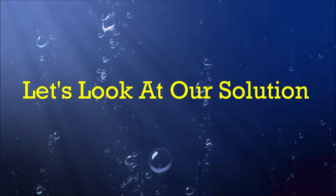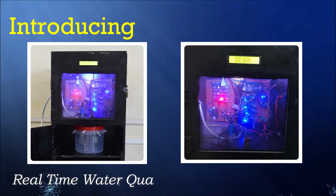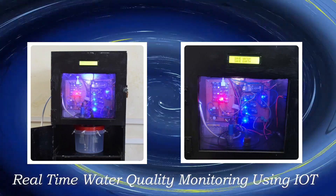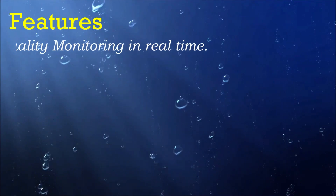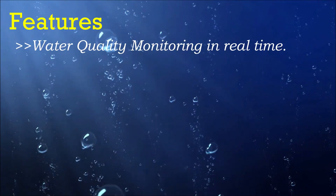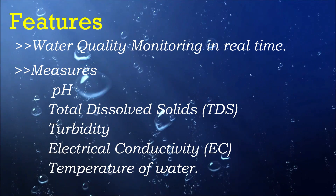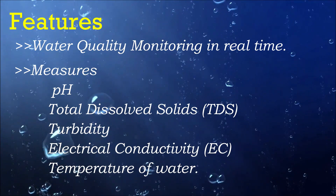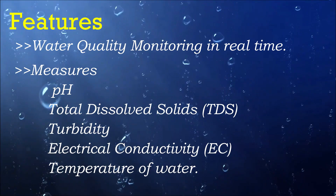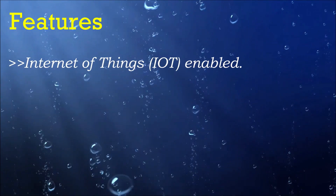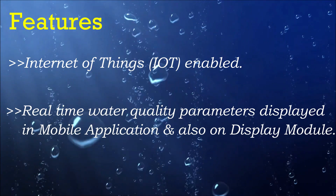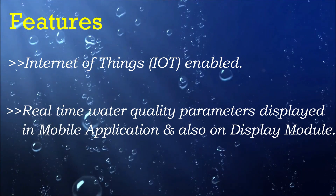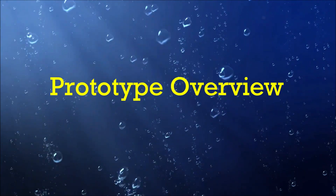Let's look at our solution for this problem — introducing real-time water quality monitoring using IoT. Features of this project include water quality monitoring in real-time, measuring pH, total dissolved solids, turbidity, electrical conductivity, and temperature of water. The system is Internet of Things enabled, with real-time water quality parameters displayed in a mobile application and also on a display module. Now let's have a look at the prototype.